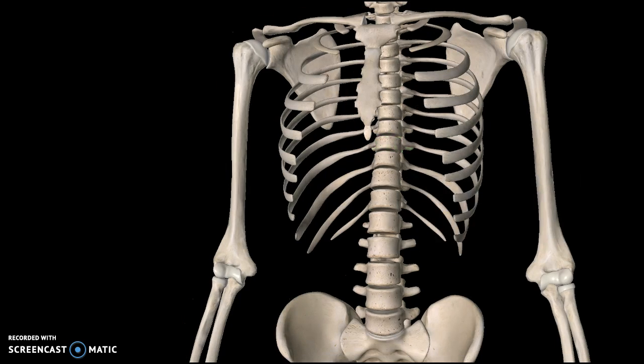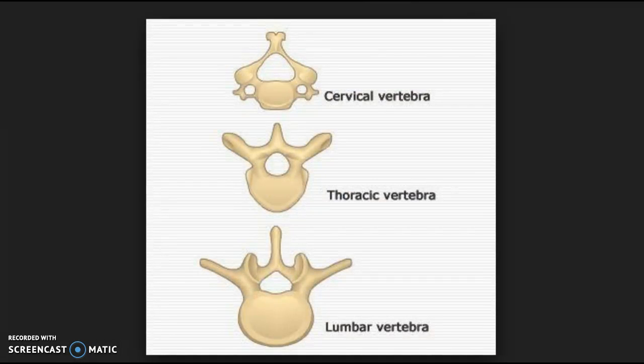Now we can see the differences between each structure. The thoracic vertebra and the lumbar vertebrae are very similar to each other, but it is the cervical vertebrae that are a bit different.